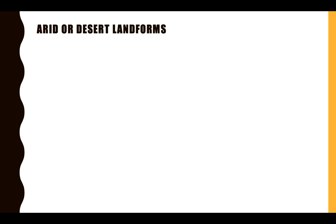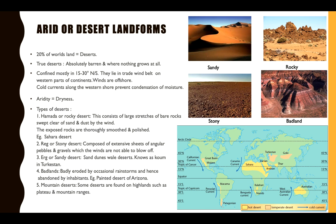Today we are going to study desert landforms. First, let's discuss some key words. 'Arid' and 'aridity' — these are words people are often confused about. Aridity means the lack of water, plain and simple. Deserts are places where precipitation is very low, rainfall is very low, and vegetation is not much. Now if we see desert distribution, about 20% of the world's land is desert, and areas with precipitation below 25 centimeters are classified as deserts.